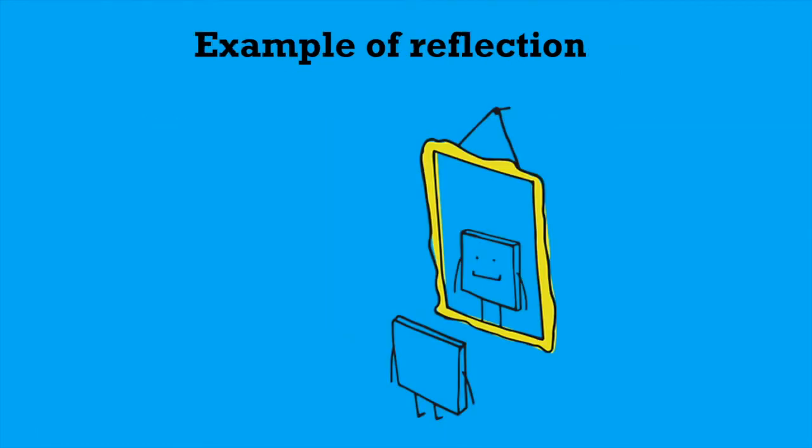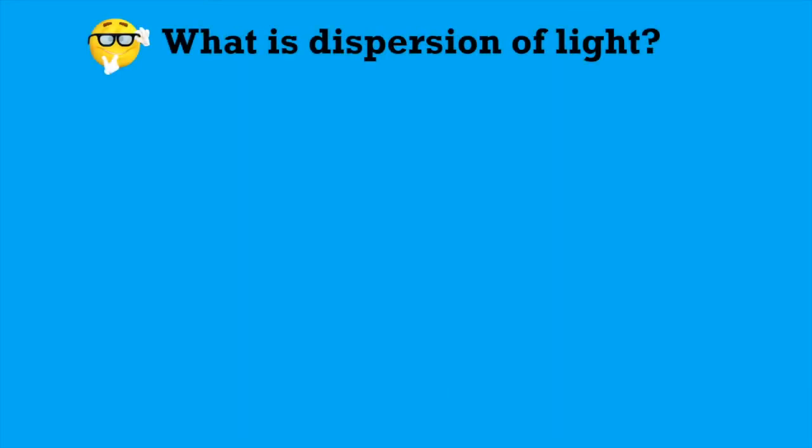The best and well-known example of this reflection is mirror. Light bounces back from the shiny surface of this mirror and we can see an image. This is reflection. What is dispersion of light?